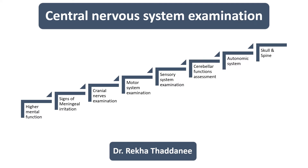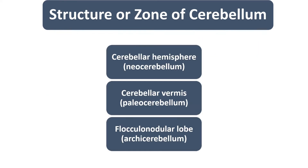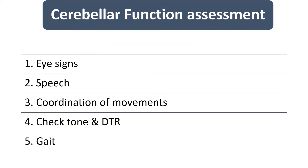Hello everyone, today I am going to cover one part of the CNS examination. I have already covered higher mental function, meningeal irritation, cranial nerve, motor system, and sensory system. The next step is Cerebellar Function Assessment. The structures included in the cerebellum are the cerebellar hemisphere, vermis, and the flocculonodular lobe. A lesion in a particular area leads to specific cerebellar signs. We will assess eye signs, speech, various coordination movements, tone, reflexes, and gait.